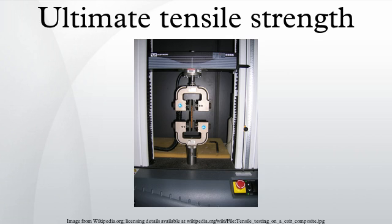Tensile strength is not the same as compressive strength and the values can be quite different. Some materials will break sharply, without plastic deformation, in what is called a brittle failure. Others, which are more ductile, including most metals, will experience some plastic deformation and possibly necking before fracture.